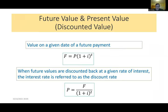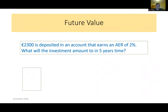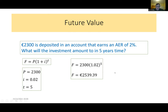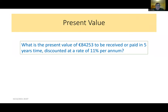For a future value example: €2,300 is deposited in an account earning an annual equivalent rate of 2%. Using F equals P times (1 plus i) to the t, P is 2300, i is 0.02, and t is 5 years. Substituting into the formula gives a future value of €2,539.39.